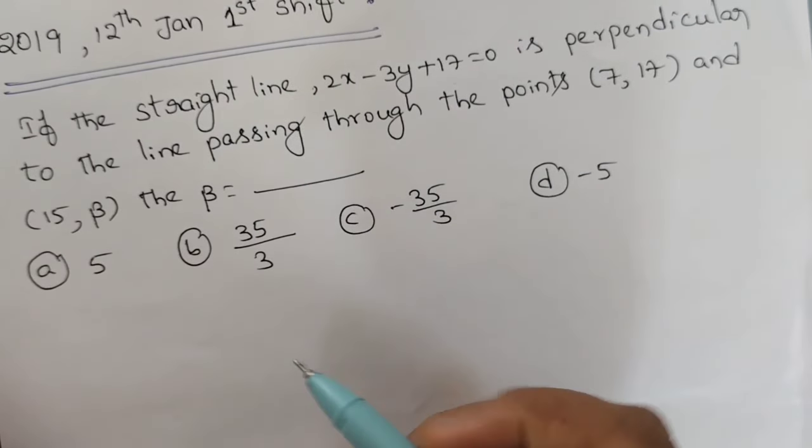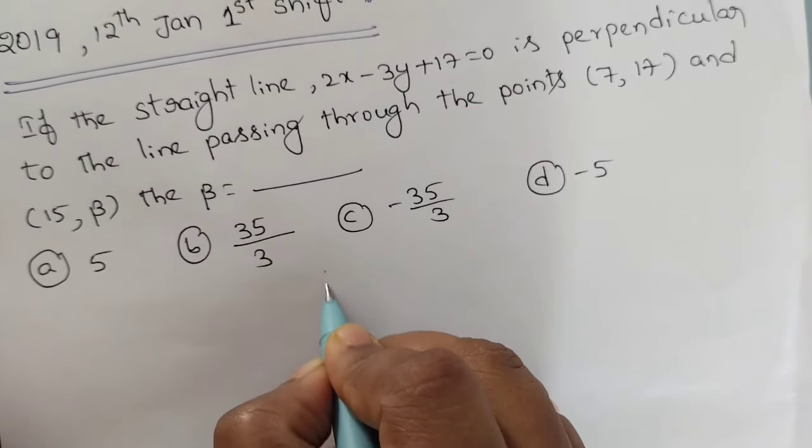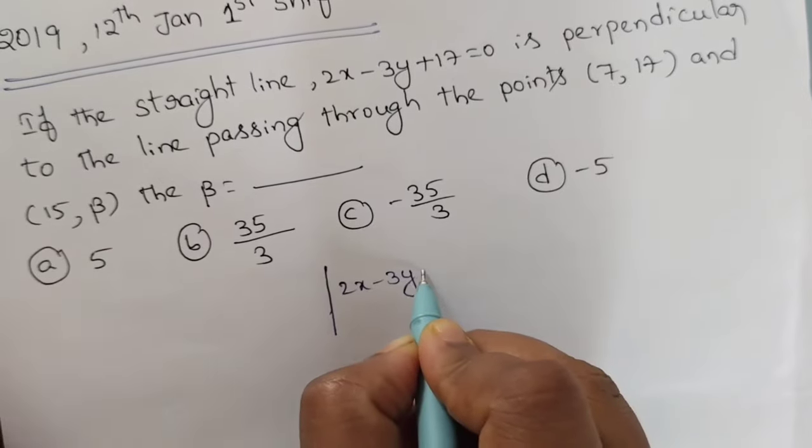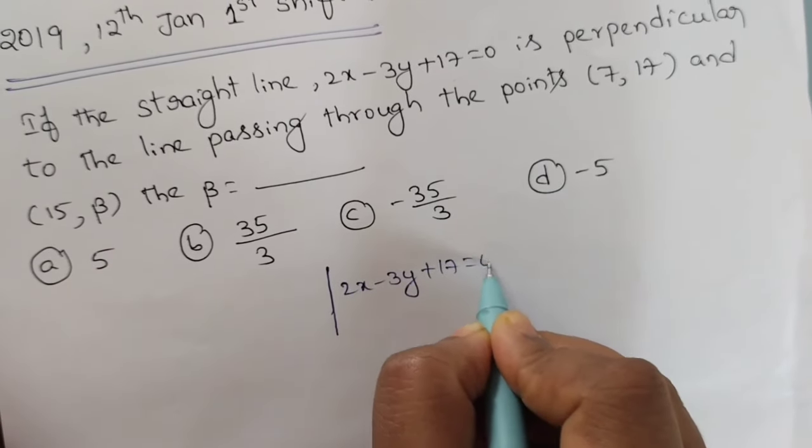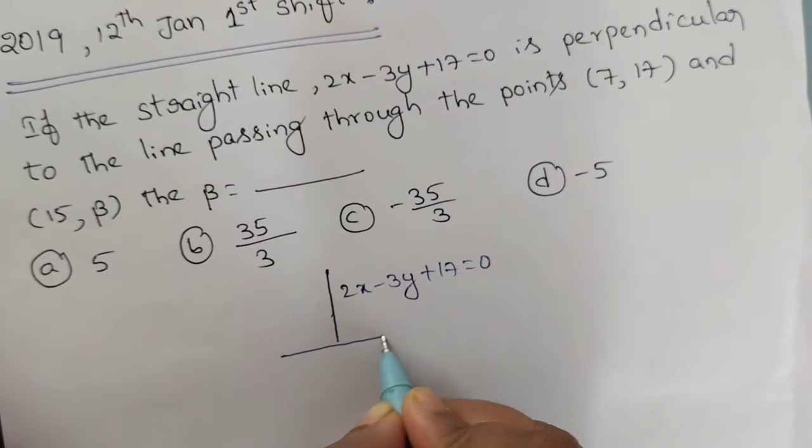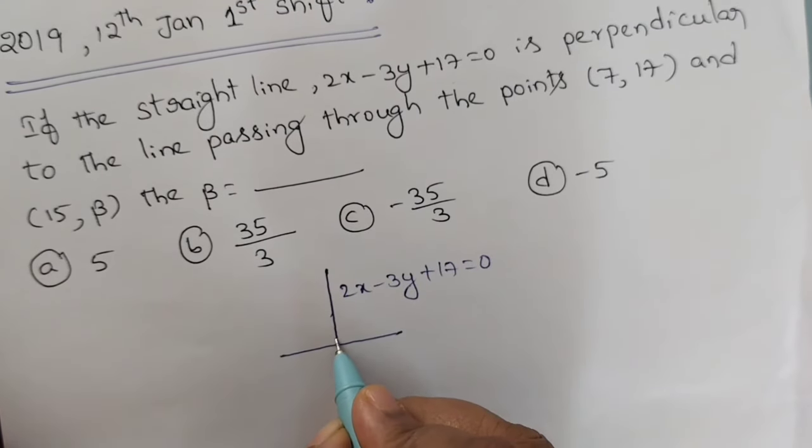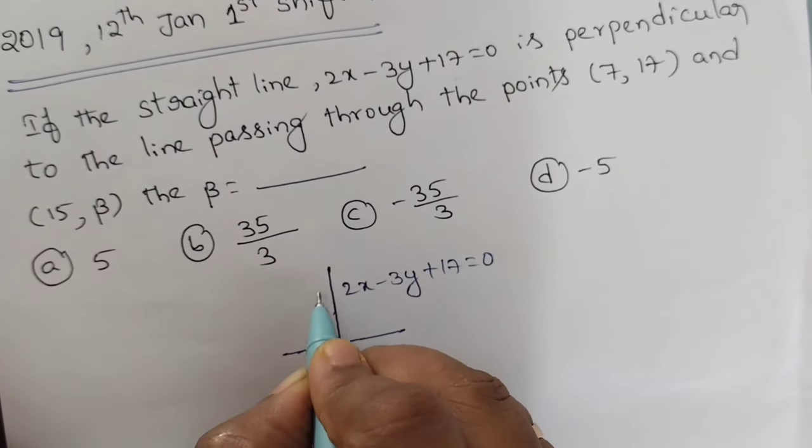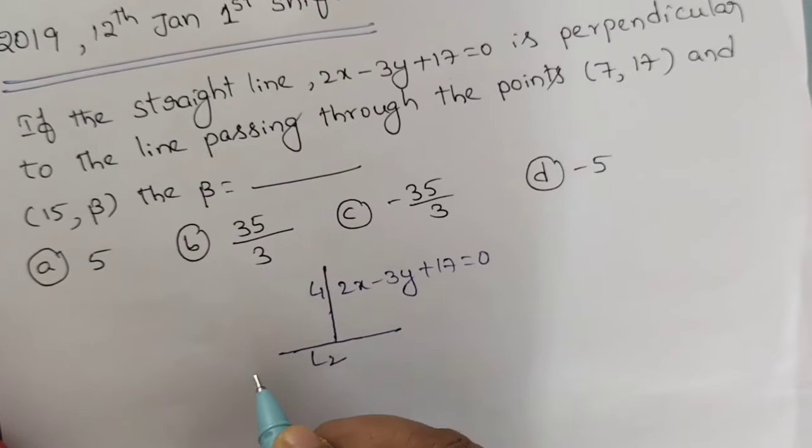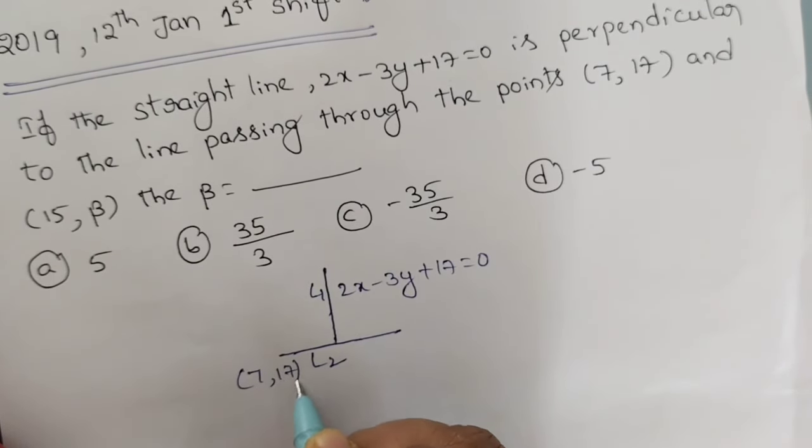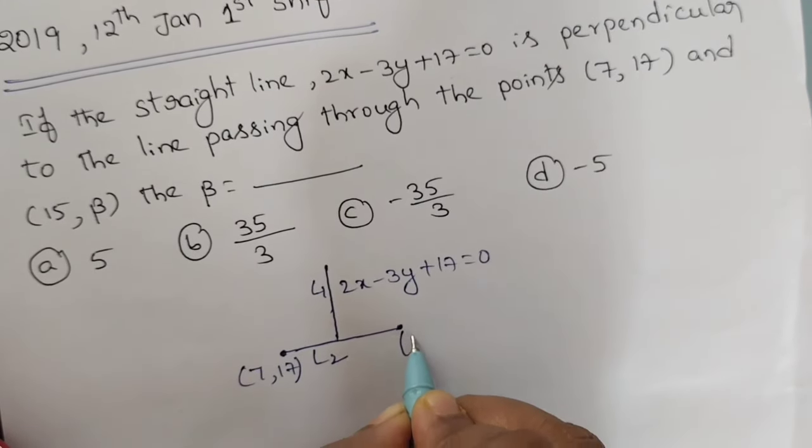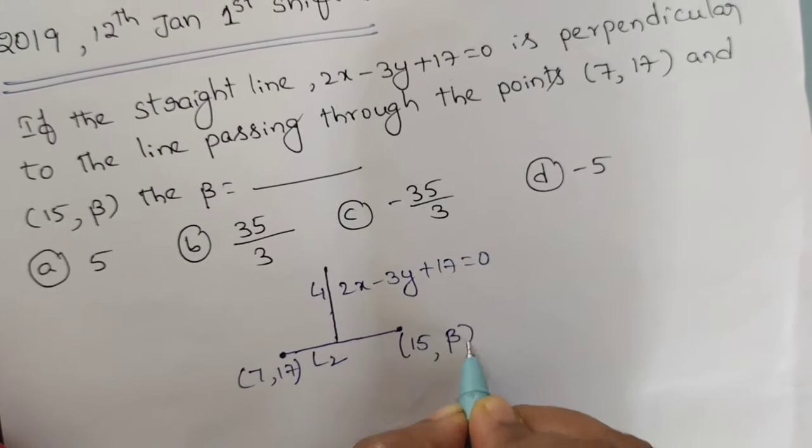This line is perpendicular to another line, so draw the line 2x minus 3y plus 17 equals 0. This line is perpendicular to another line, say this line is L1. So this is another line, it is L2. The second line passes through points (7, 17) and (15, beta).